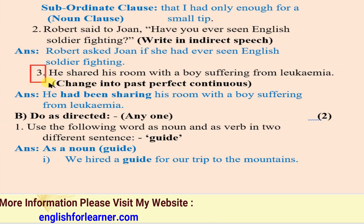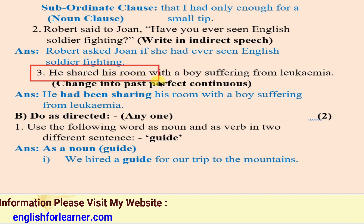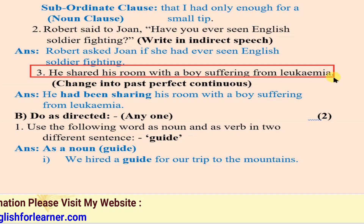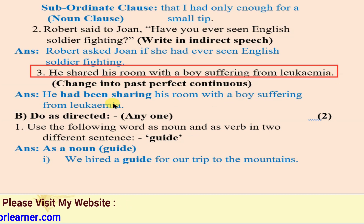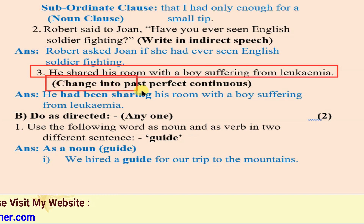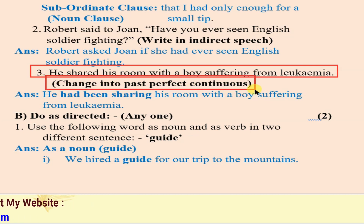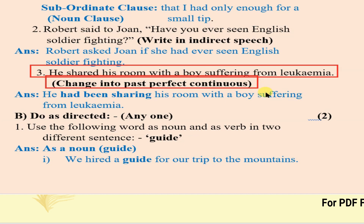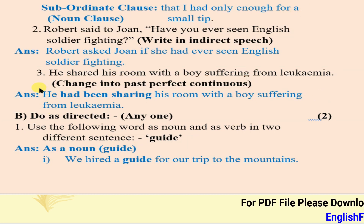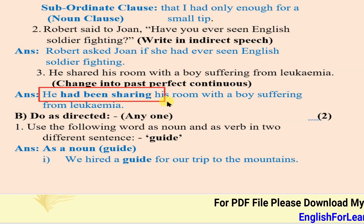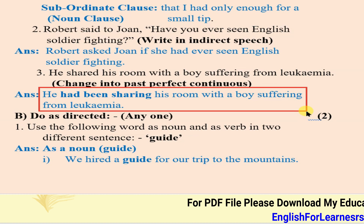Next, activity number three: 'He shared his room with a boy suffering from leukemia.' Change it into past perfect continuous tense. The formula is: subject + had been + verb-ing. The answer is: 'He had been sharing his room with a boy suffering from leukemia.'